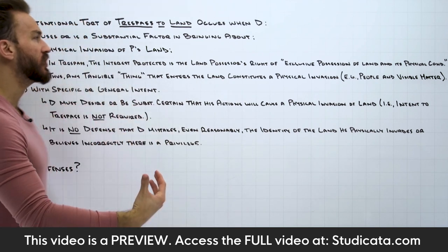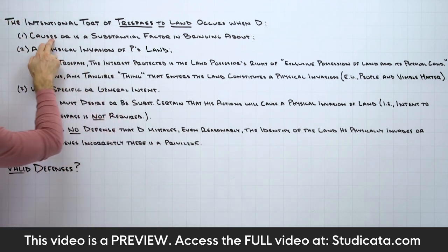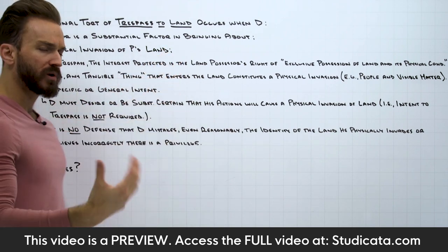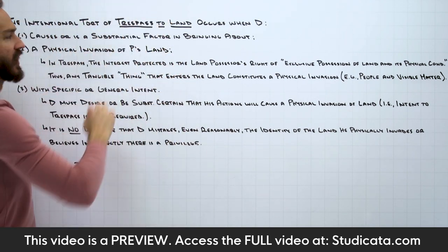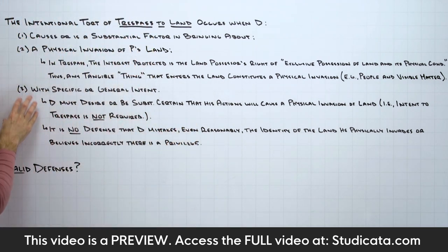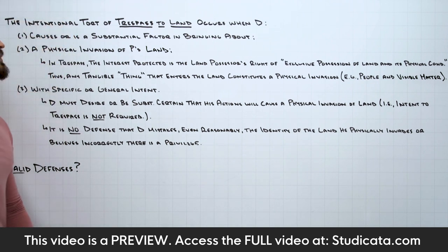This is pretty good news — it should make this more straightforward because we already have a good idea how the first and third elements work. The main focus for us will really be the second element. Of course, we'll also explain how intent works with trespass to land, because this can be tricky. But we can break it down element by element, starting with our causation requirement first.